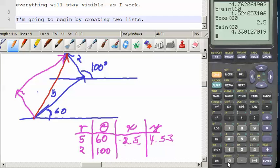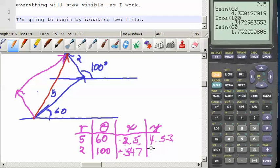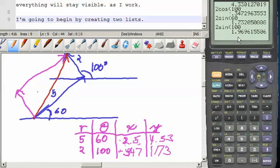x for the second vector is going to be 2 cosine 100 which gives us negative 0.347. 2 times sine of 60 is... I'm sorry, it should have been 100. So, second enter pulls that back 100 and comes out to be 1.969. Ok so that's 1.97, 1.97 would be 3 significant digits.